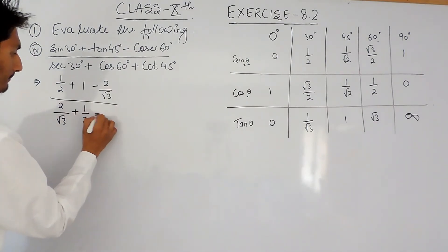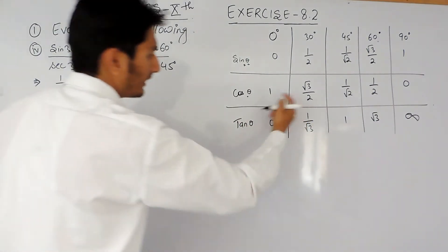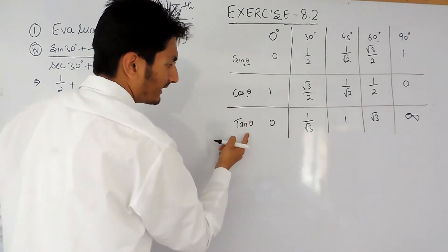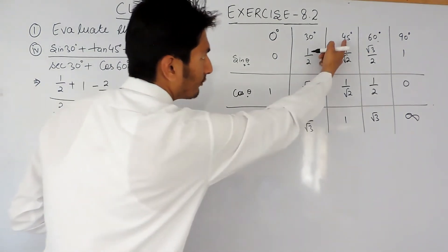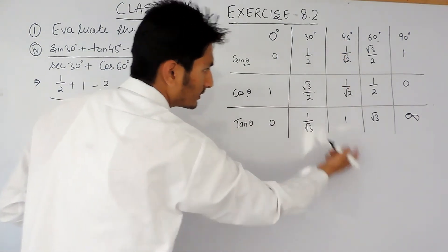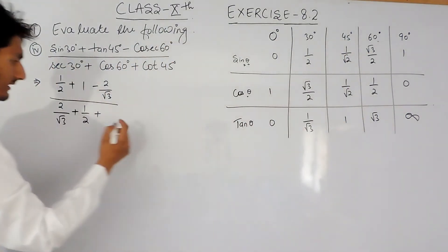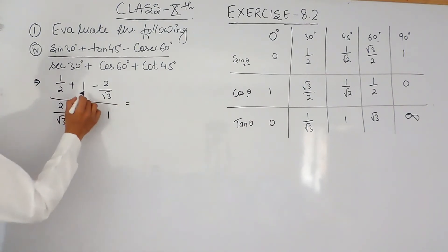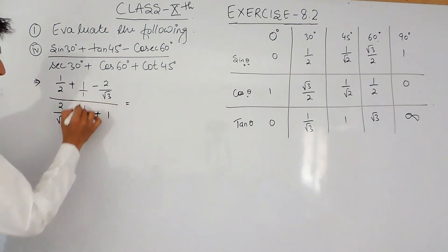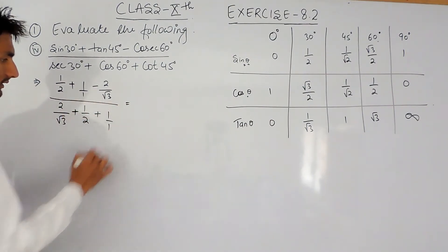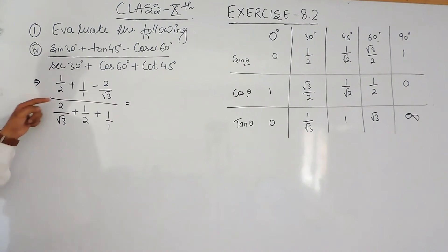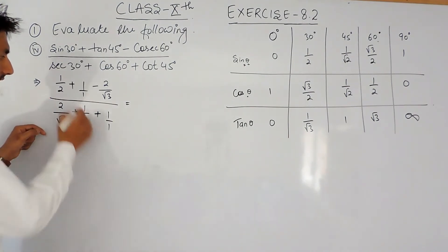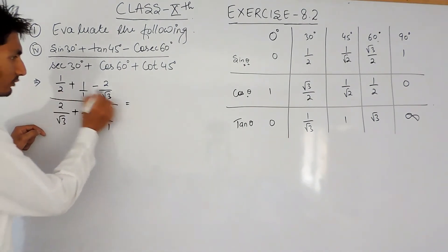And cos 45 — cos 45 is the inverse of tan 45, and tan 45 is 1, so the inverse of 1 is again 1. Now to solve this expression further, I have to take the LCM.